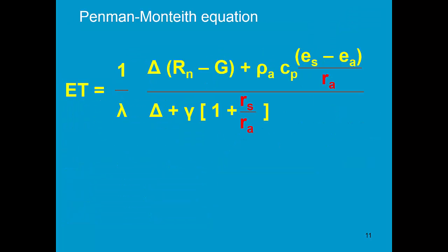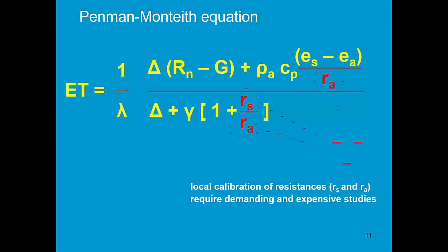This slide shows you the Penman-Monteith equation, with RS the surface resistance and RA the aerodynamic resistance. Now, the calibration of the resistance is very difficult. They are changing continuously, and we need a lot of equipment to record them. So most of the time they are unknown.